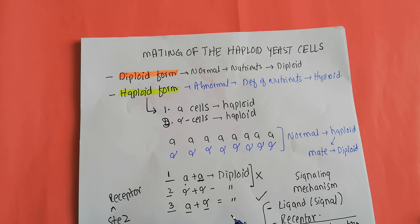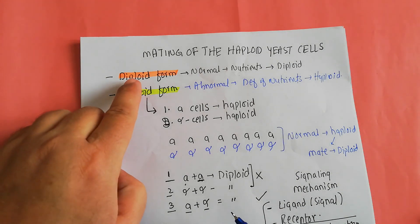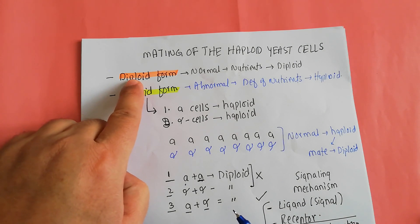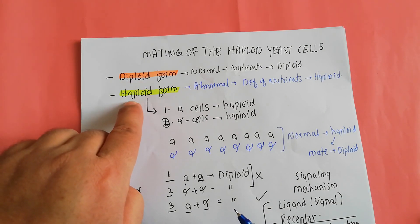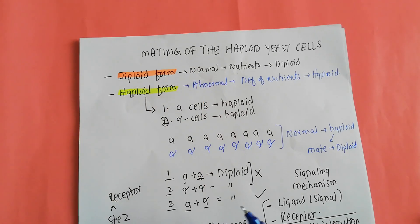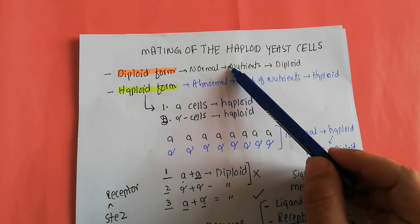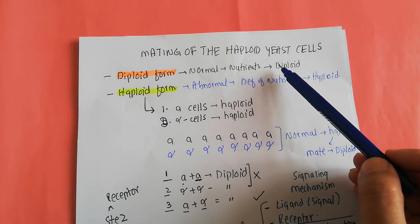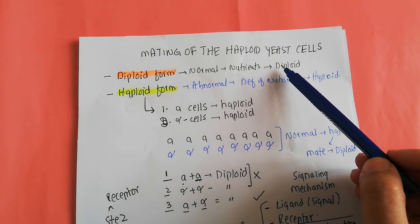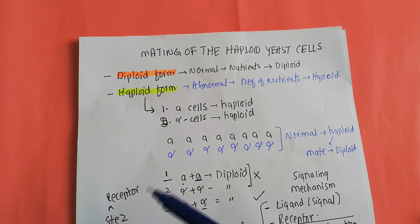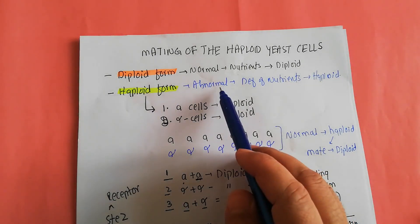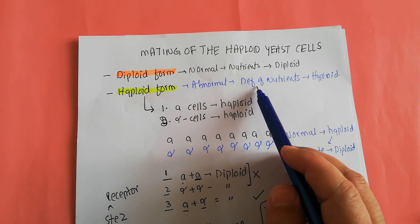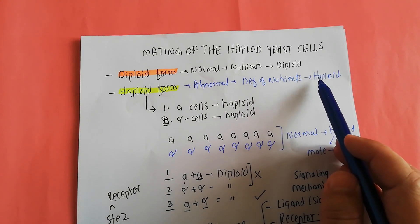Today we are specifically going to talk about the mating of the haploid yeast cells. Yeast cells can exist in two forms: diploid form and haploid form. When conditions are normal — meaning nutrients are available and all requirements for growth and division are met — they usually prefer the diploid form. When conditions are abnormal, such as nutrient deficiency, diploid cells move towards the haploid form by the process of meiosis.